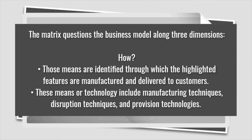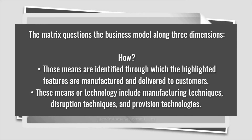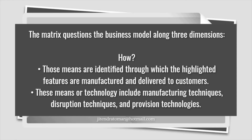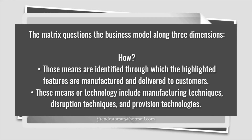The third dimension of Abell's matrix is: How? At this stage, those means are identified and characterized through which the highlighted features are manufactured and delivered to customers. These means or technology include manufacturing techniques such as a choice of technical processes, technologies, or a specific form of organization; distribution techniques such as home delivery, retailers, wholesalers, and large distribution; and provision technologies such as user license, remote operations, and so on.